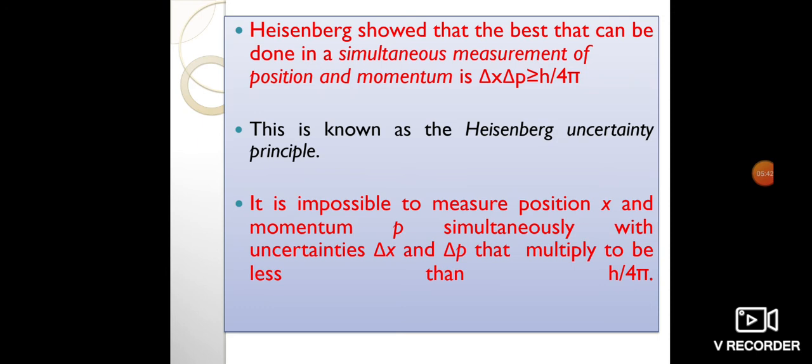Neither uncertainty can be zero, neither uncertainty can become small without the other becoming large. A small wavelength allows accurate position measurement, but it increases the momentum of the probe to the point that it further disturbs the momentum of a system being measured.